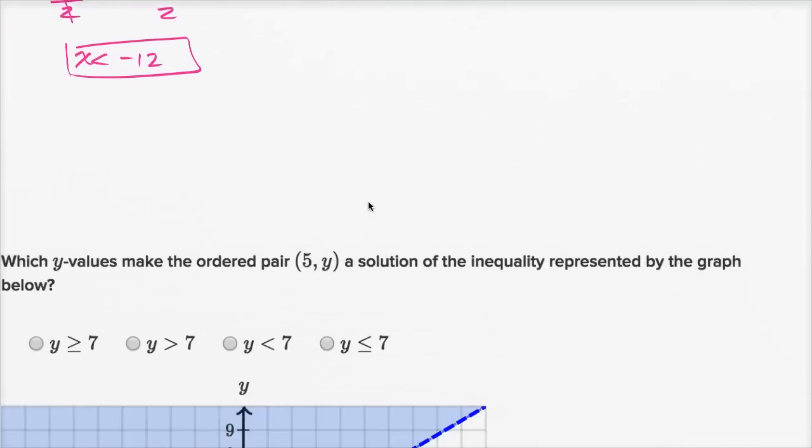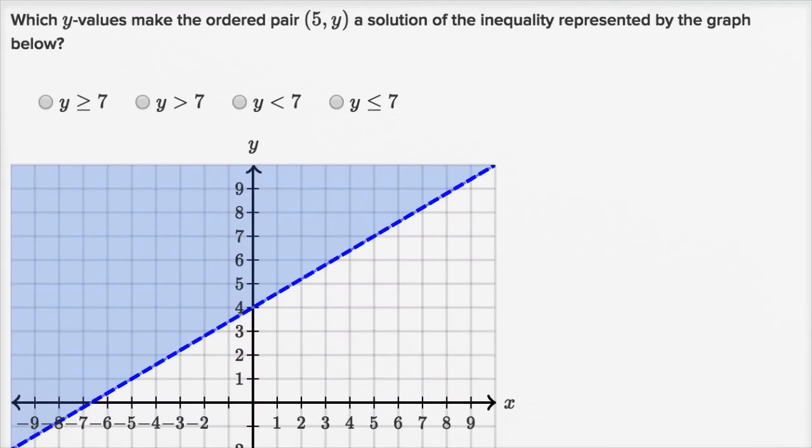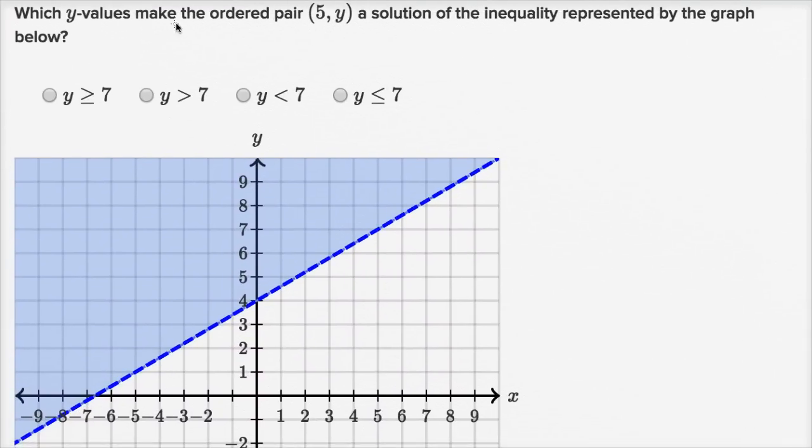Let's do another one of these. And this one is a little bit more visual. So which y values make the ordered pair? So the last one, we constrained what y was, and we figured out what x values would satisfy the inequality. Now we're going the other way around. We're constraining x, and we're saying what y values would make the ordered pair true, or make it a solution. Which y values make the ordered pair (5, y) a solution of the inequality represented by the graph below? So they didn't give it to us algebraically, they gave it to us visually.